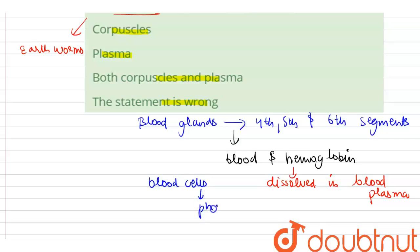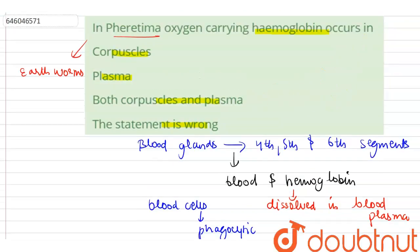are phagocytic in nature. Pheretima exhibits a closed type of blood vascular system consisting of blood vessels, capillaries, and heart. Hence, the oxygen carrying hemoglobin occurs in plasma. Hemoglobin is present in plasma.